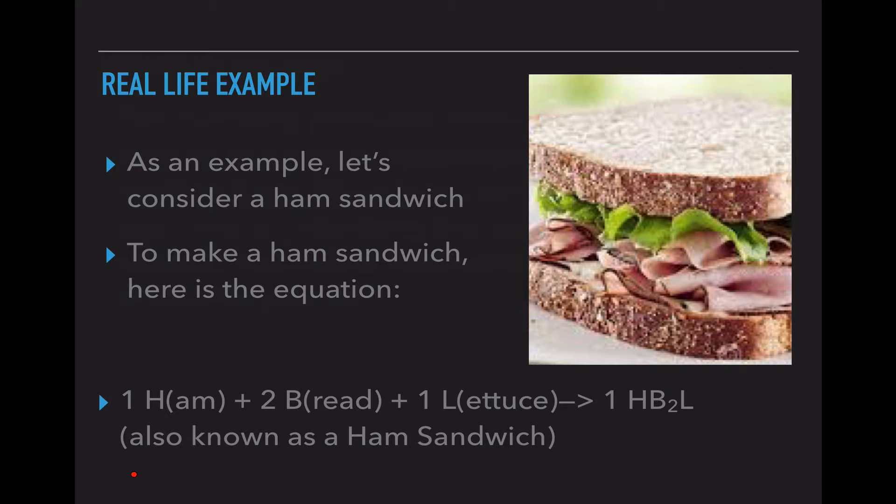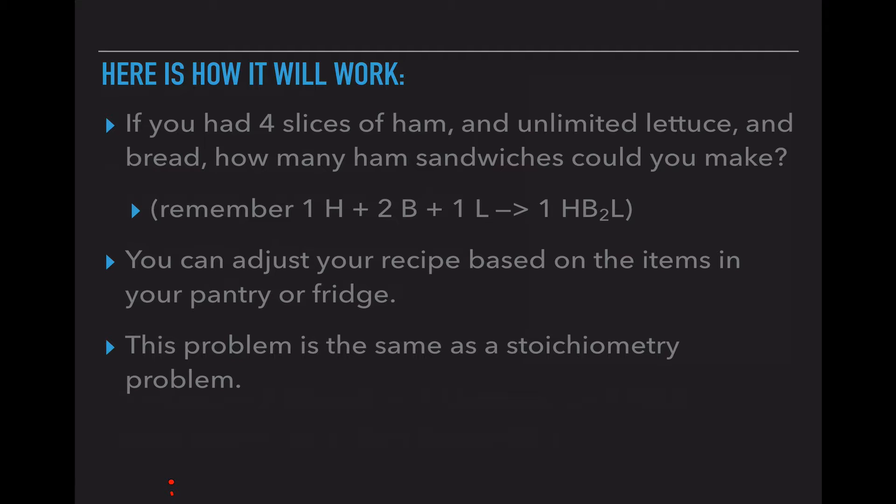Here's a real-life example, not in the form of cupcakes, but I do like me some cupcakes. Let's consider a ham sandwich. So we have this chemical reaction down at the bottom. We have one ham plus two bread, so one H plus two Bs, plus one lettuce, or one L, creates one ham, two pieces of bread, and one piece of lettuce sandwich. So we need one piece of ham and one piece of lettuce, and we need two pieces of bread to create this balanced reaction. So here's our example of what we're going to use for our ham sandwich.